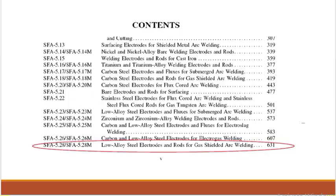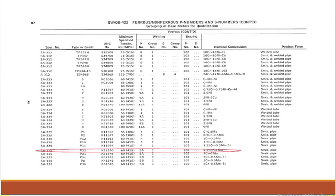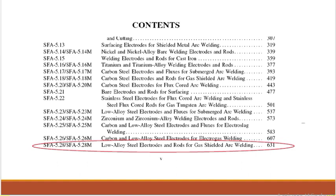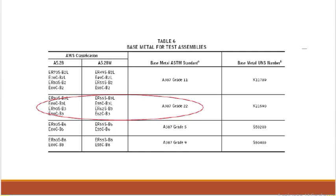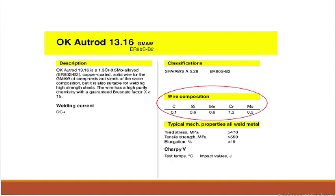So now you understand where we get the selection of the filler metal. SA-335 with GTAW: go to QW-422, find material grade P22 (low alloy steel), go to ASME Section 2 Part C, find SFA 5.28 or 5.28M for gas shielded arc welding. In SFA 5.28, available electrodes include ER55 series. The base metal for test assemblies is A387 Grade 22. Check chemical composition — carbon, silicon, manganese, chromium, molybdenum — it should match the base metal composition.